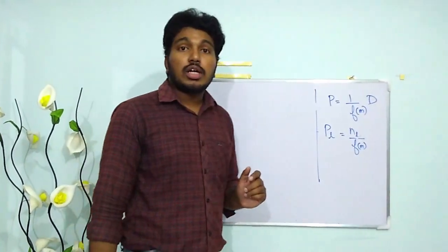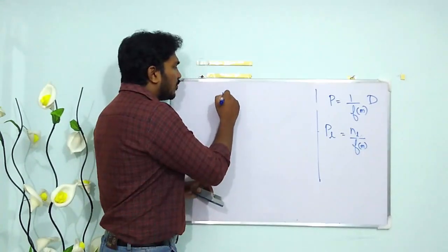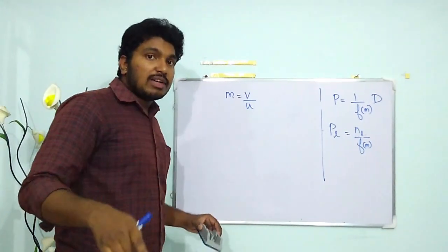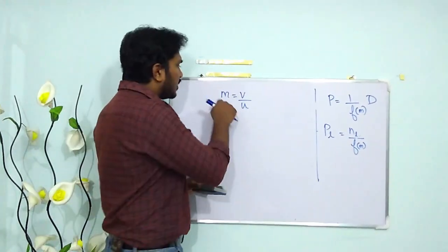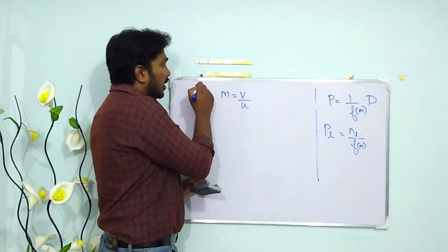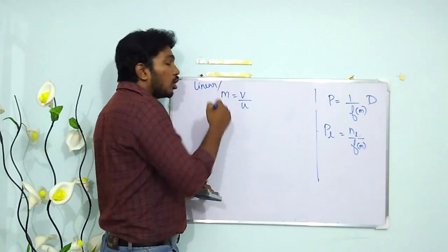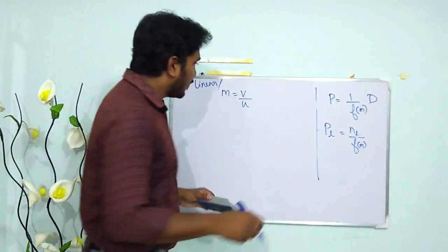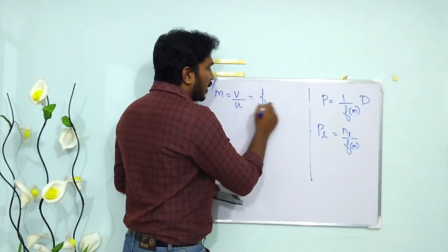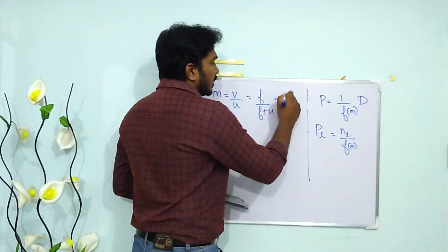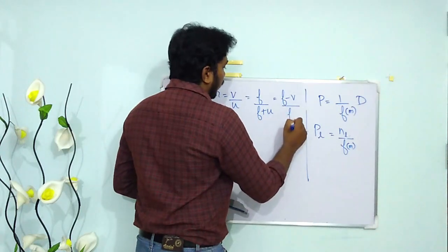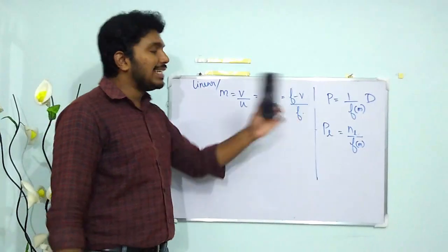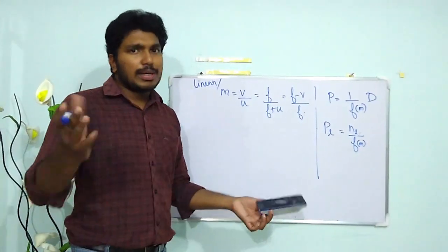The magnification of a lens — linear or transverse (also called lateral) magnification — is given by M = V/U. Note: in a mirror it was −V/U, but here it is V/U. This is also equal to F/(F + U), or equivalently (F − V)/F. You can also use HI/HO.